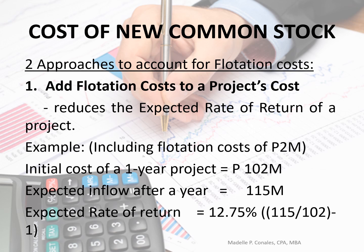If we include flotation costs of $2 million, they are added to the cost, making it $102 million. So $115 divided by $102 gives us 12.75%. As you can see, if we add flotation costs to our project costs, our expected rate of return will be reduced.